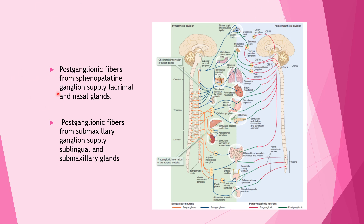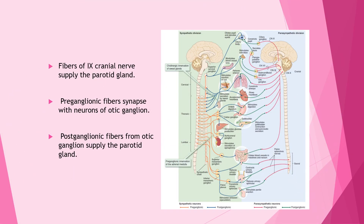Postganglionic fibers from the sphenopalatine ganglion supply the lacrimal glands and nasal glands. Postganglionic fibers from the submaxillary ganglion supply the sublingual and submaxillary glands. Fibers of the 9th cranial nerve supply the parotid gland.